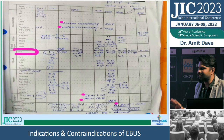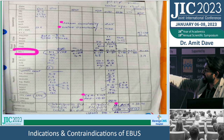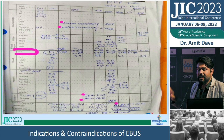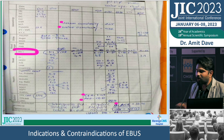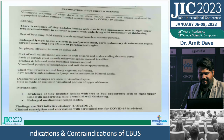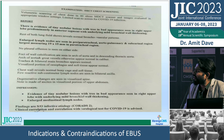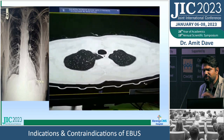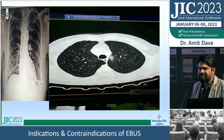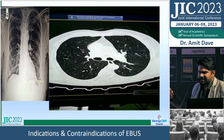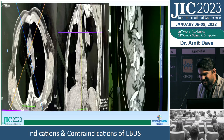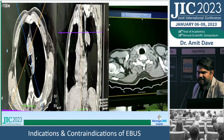Workup revealed a single enlarged pretracheal node measuring 19 x 15 mm. The chest X-ray was unremarkable, but the mediastinal window CT showed the largest node in the pretracheal area. Despite the node being less than 15 mm, I decided to perform EBUS given the unexplained persistent hyponatremia. The ROSE result? A first-year PG student could answer — it was tubercular vasculitis and granuloma.